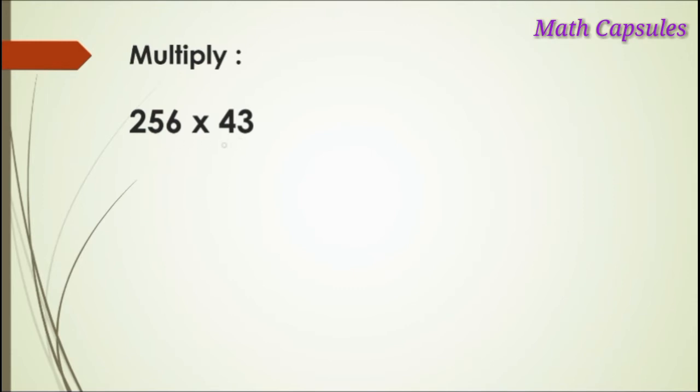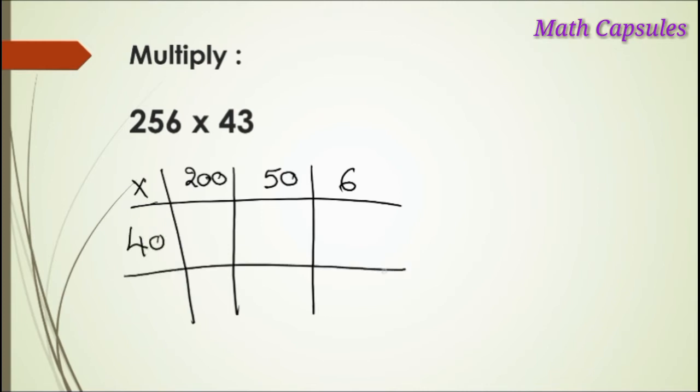Another example: 256 times 43. Again, 256 can be written as 200, 50, and 6. And also we have here the multiplication, and the 43 is 40 and 3. Now we multiply each number from this row by each number of this column.